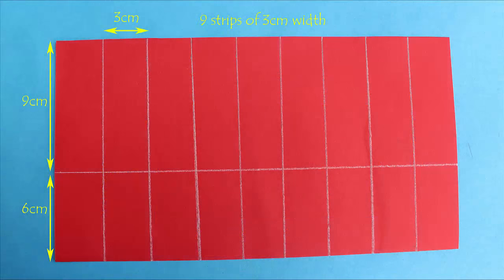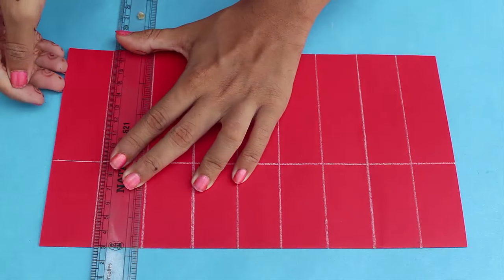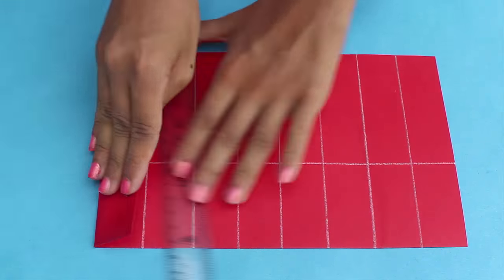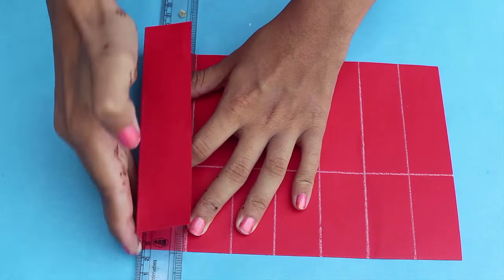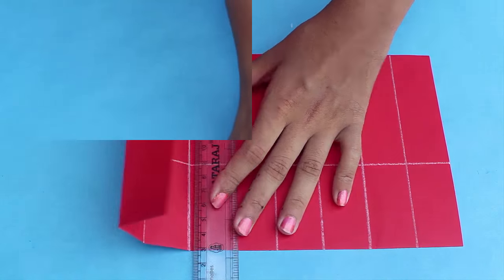You have to start by drawing lines of 3 centimeter so that your chart paper is divided into 9 strips. The portion with height 9 centimeter will be the height of the mug, and the portion with 6 centimeter height will be the base.